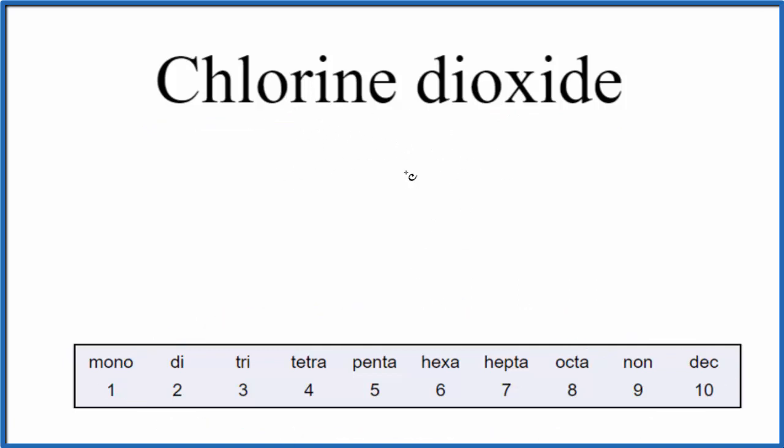To write the formula, we have chlorine, so let's just write the element symbol for chlorine, that's Cl, and then oxide, that's from oxygen. So we have chlorine dioxide, the 'di' tells us we have two oxygen atoms.